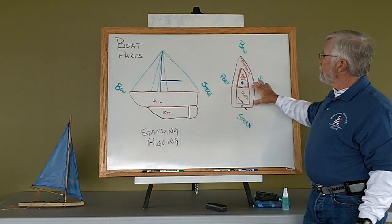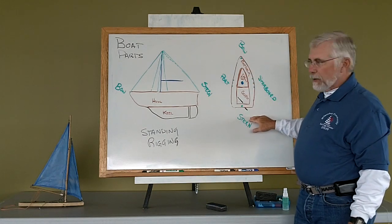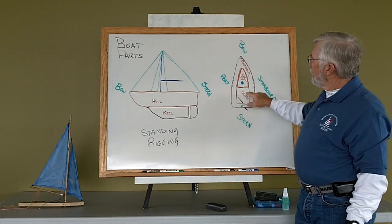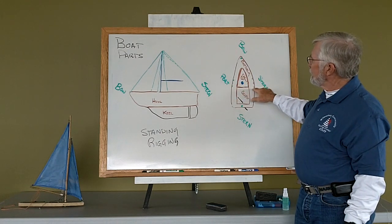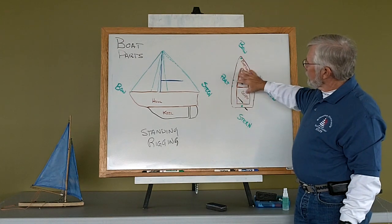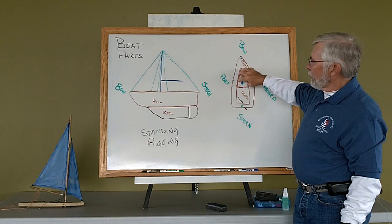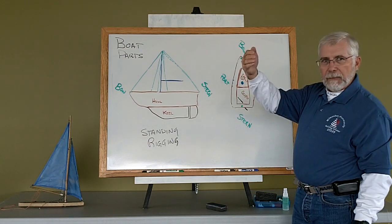Looking down on our same boat, we have the bow, which is the front of the boat, the stern, which is the back of the boat. We have our side stays, our forestay and our backstay. And we have a little cabin, cutting cabin area. So we have a cabin top and out of the cabin top comes our mast.